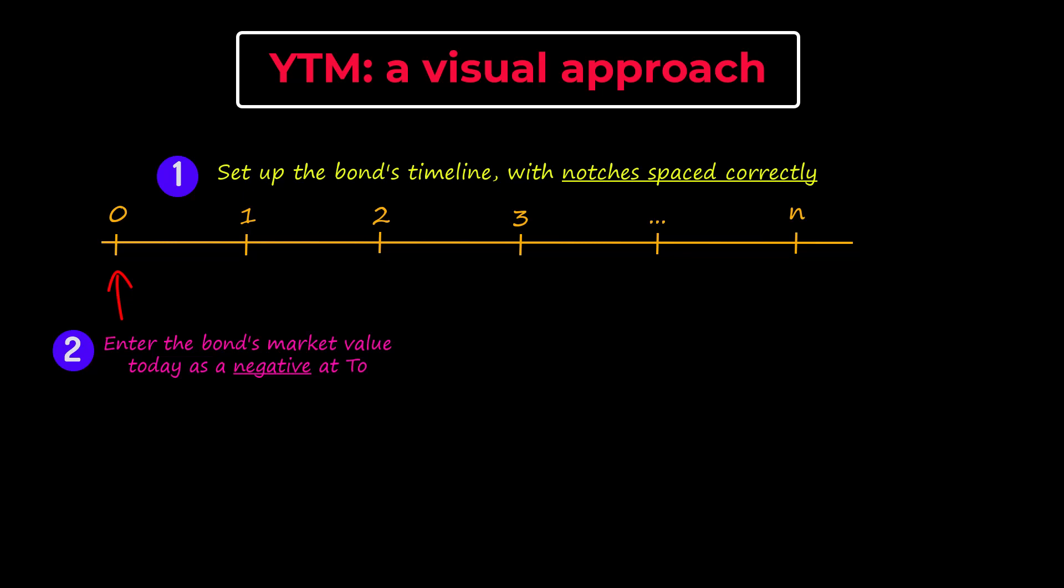Following this, the timeline is populated with the periodic coupons and the maturity value all as positive cash flows. Think of them as being receipts for the investor.